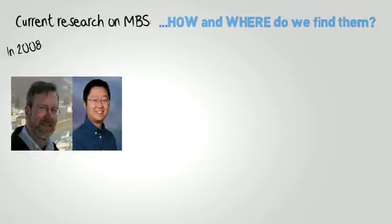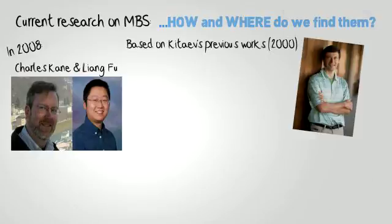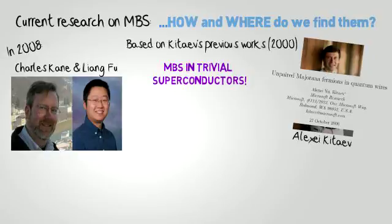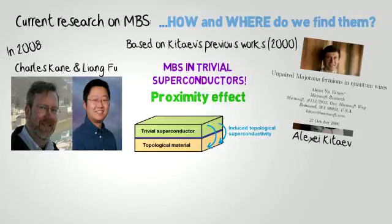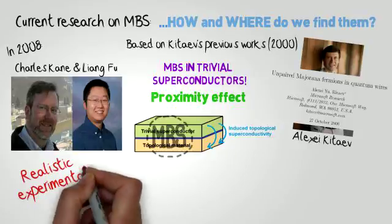In 2008, Kane and Fu published a paper based on Alexei Kitaev's previous work. They posited the possibility to find Majorana bound states using trivial superconductors in contact with topological materials. By means of the proximity effect, the topological material acquires induced superconductivity, and a topological superconductor can be formed. Majorana bound states are zero energy solutions of this sophisticated state of matter. This proposal opened the door to many other theoretical works.